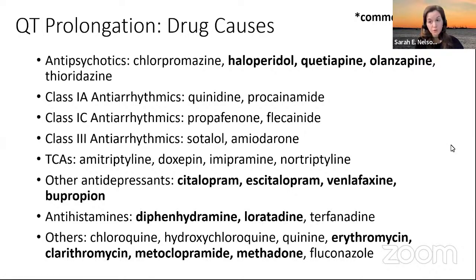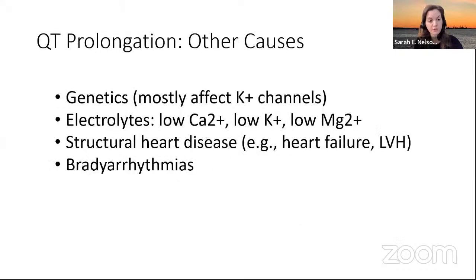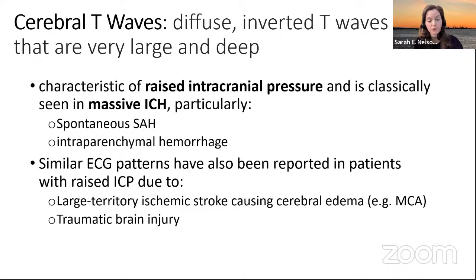These patients can get a lot of QT-prolonging medications, particularly in the ICU. The major ones include antipsychotics, antidepressants, methadone, and antibiotics. You can end up with quite a milieu that's concerning for the patient. This is where your friendly neighborhood pharmacist can come in handy to make sure you're not going astray with too many QT-prolonging medications. And the first-line pharmacologic treatment of torsades? Magnesium. Cerebral T waves are also worth noting — characteristic of raised intracranial pressure, classically seen in massive ICH. An example from a previous case showed large, deep inverted T waves — an 18-year-old with a large tumor with necrosis and edema.